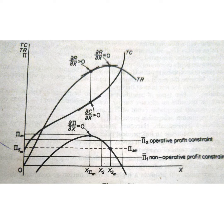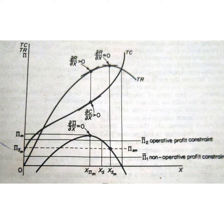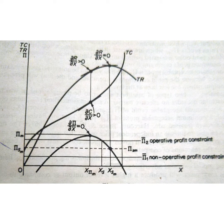So there are two types of equilibria possible. The first is one where the profit constraint provides no effective barrier to sales maximization — that is X SM units of output with minimum acceptable profit of pi 1. The second equilibrium is where the constraint is operative — XS units of output with minimum acceptable profit of pi 2. The firm can pursue an independent price policy to achieve its goal of sales maximization. The sales maximizer will produce a higher level of output compared to the profit maximizer, and the price of the profit maximizer will be higher than that of the sales maximizer.